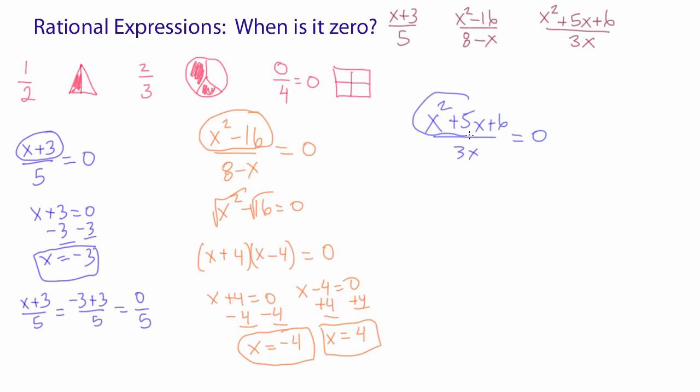Well, again, we take the numerator: x squared plus 5x plus 6. When is it zero? That's not going to be a problem. Again, if we remember how to factor trinomials.